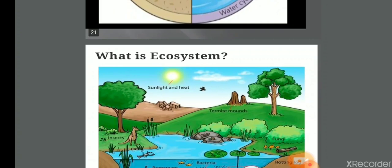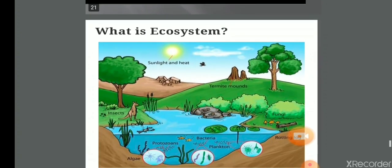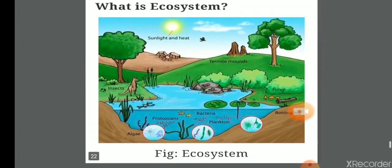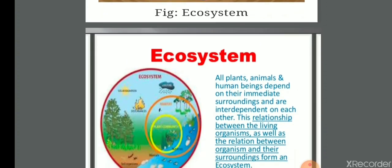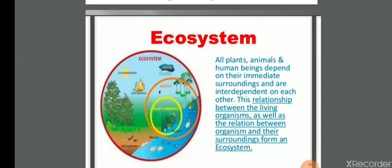What is ecosystem? All plants, animals, and human beings depend on their immediate surroundings and are interdependent on each other. This relationship between the living organisms, as well as the relation between organisms and their surroundings, form an ecosystem.